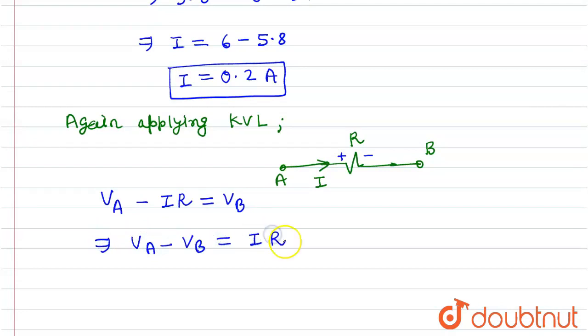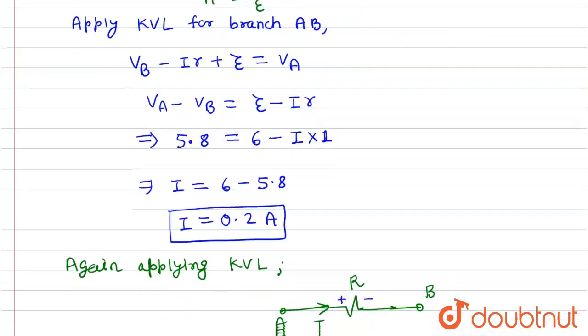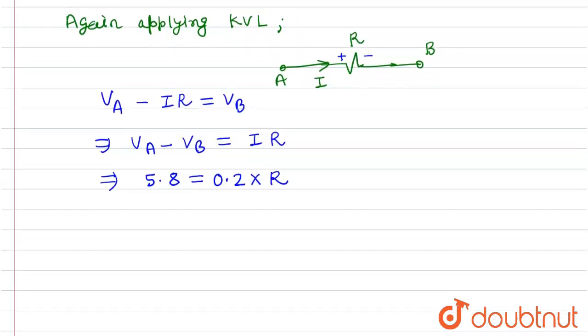And we have the value of VA minus VB which is 5.8 volt, so this will be 5.8 volt. The amount of current is already calculated which is 0.2 ampere multiply by resistance.